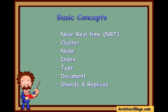In a single cluster we can have as many nodes as we want. The next concept is index. An index is a collection of documents that have somewhat similar characteristics. For example, we can have an index for all customer data and another index for all product data. An index is useful to differentiate the data — it's a collection of similar documents.